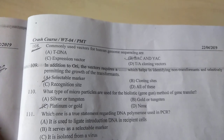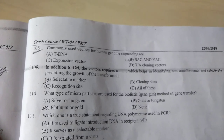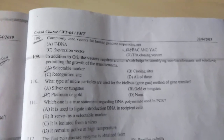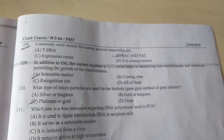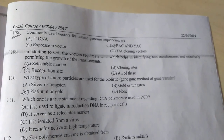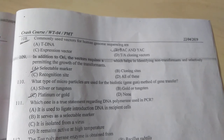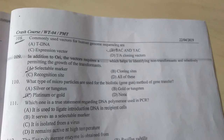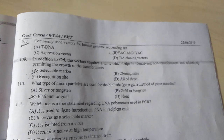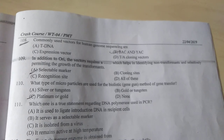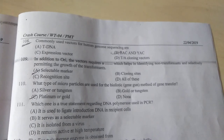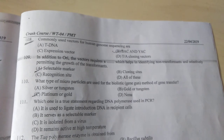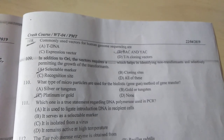Question number 108: Commonly used vector for human genome sequencing — B is the correct answer. Question number 109: In addition to ori, the vectors require a — which helps in identifying non-transformants and selectively permitting the growth of transformants. There are four options, and the correct answer is A — selectable marker.